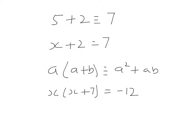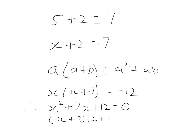Is x times x plus 7 always equal to minus 12? No. Therefore, x squared plus 7x plus 12 equals 0 — oh, it's my favourite quadratic equation. Brilliant. x plus 3 times x plus 4 equals 0. Therefore, x is minus 3 or minus 4. So this statement is only true when x is minus 3 or minus 4, so it's an equal sign, not an equivalence sign. In proofs, we need the equivalence sign.